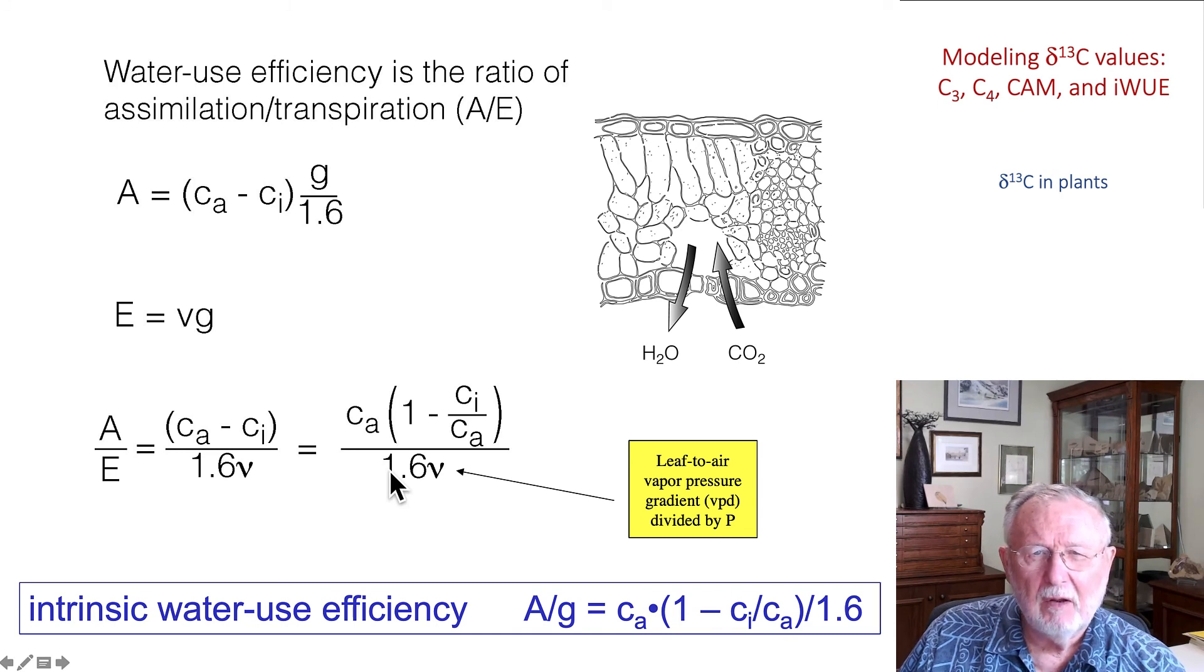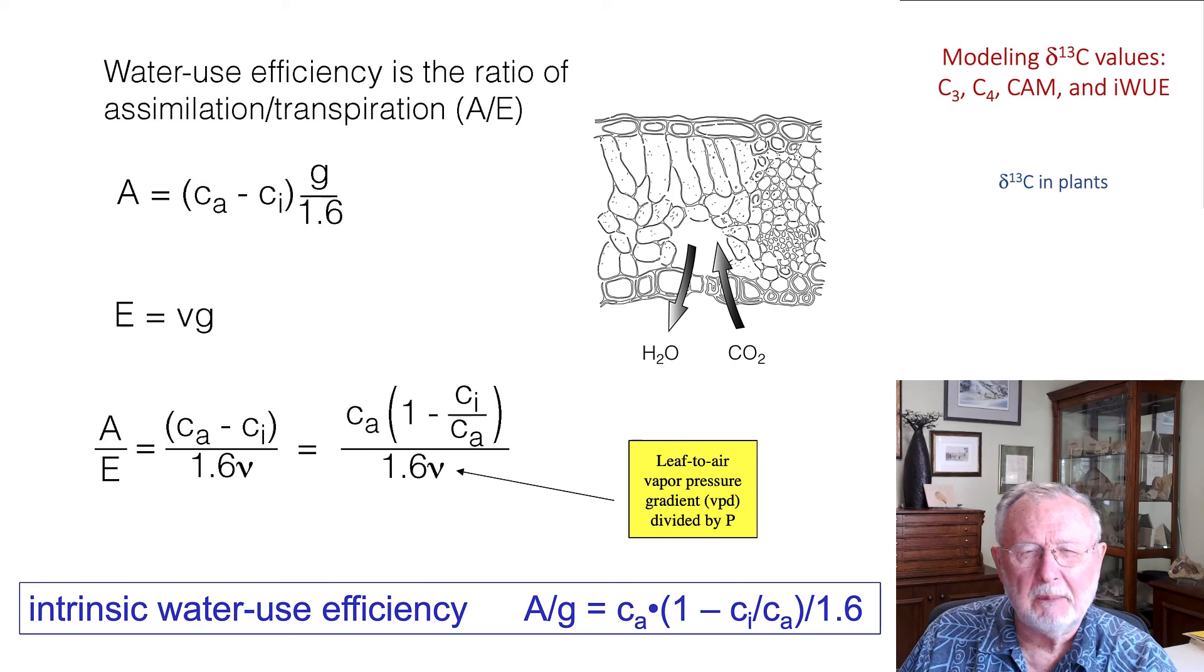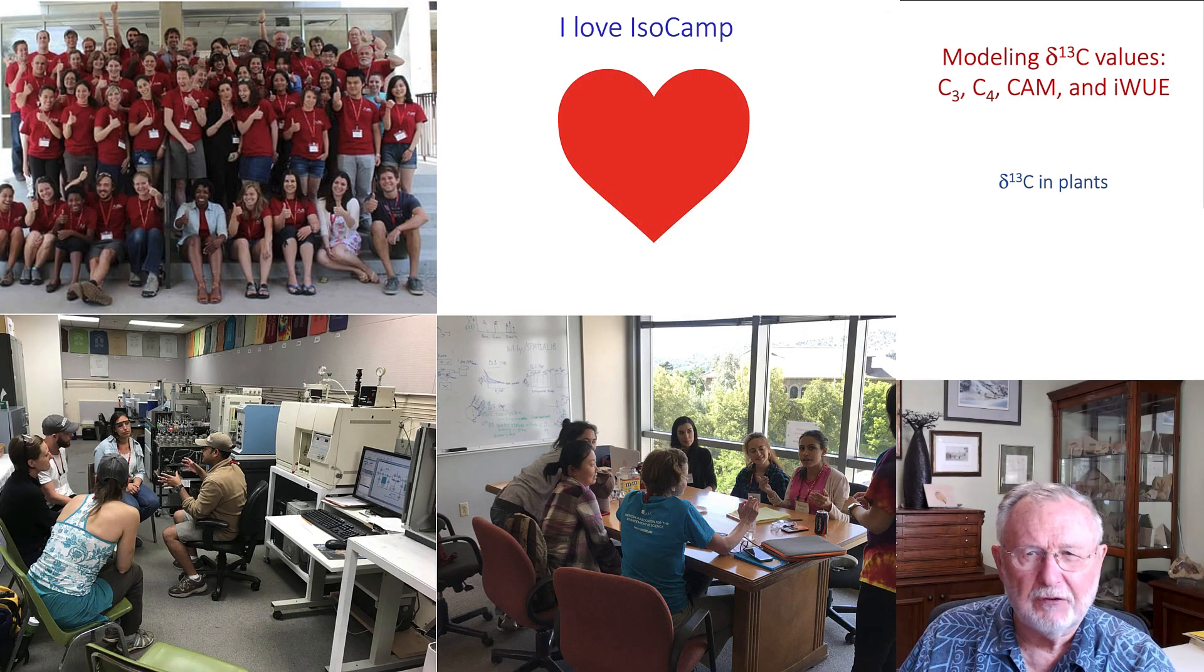Instead, what carbon isotope ratios really give you is the intrinsic water use efficiency, which is the photosynthetic rate relative to conductance, and that is this term here on the right. Intrinsic water use efficiency has received a lot of attention recently. Too often though, in the publication titles, they simply say water use efficiency instead of intrinsic water use efficiency.